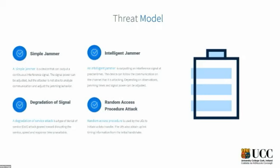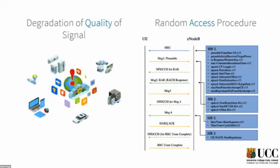We use two types of attacks: degradation of signal quality, and the random access procedure attack where we jam the response from the base station. For signal quality degradation, the energy consumption of the NB-IoT device is highly dependent on the quality of the signal it receives. A better quality signal means it doesn't need to repeat the message as many times and uses less energy. So when simulating signal degradation, we add white Gaussian noise to trick both the base station and the NB-IoT device into thinking it has a bad signal.